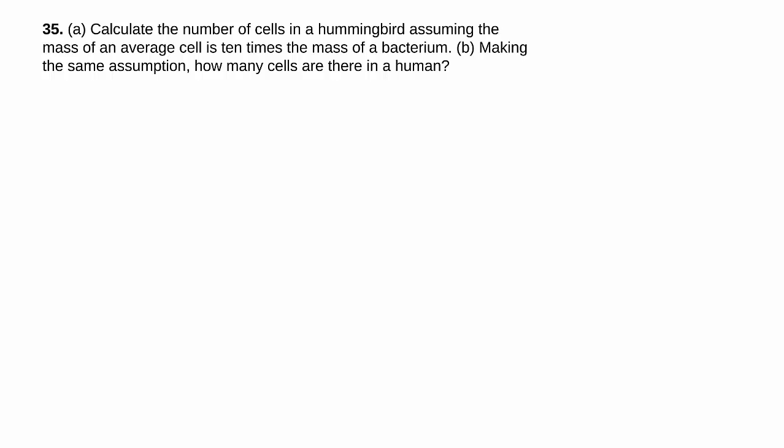Here we have they're asking us to calculate the number of cells in the hummingbird assuming the average cell is 10 times the mass of the bacterium. You notice they do use 10 because it works easily in terms of calculation because you just move the decimal points around or change the powers of 10. And then they're talking about how many cells are in humans.